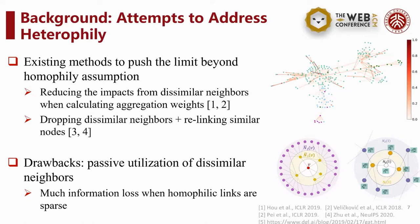Such methods focus on filtering dissimilar neighbors while paying little attention to the utilization of dissimilarity. When homophily links are sparse, which is general in heterophily situations, these methods may discard too much information and become inefficient and ineffective. Therefore, it is crucial to leverage dissimilarities in an active manner rather than eliminate them passively.